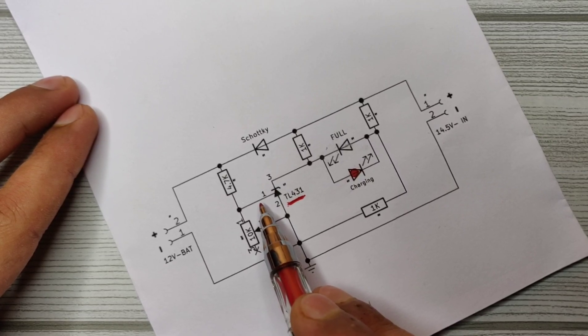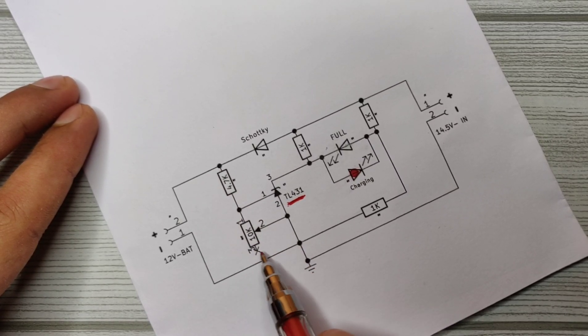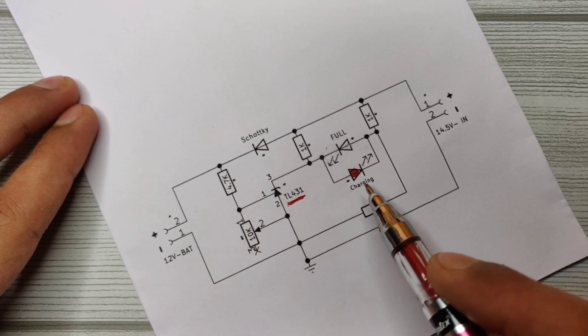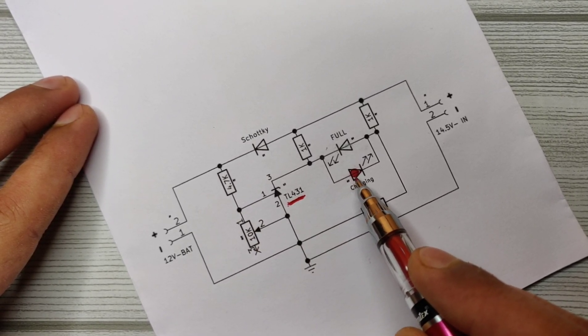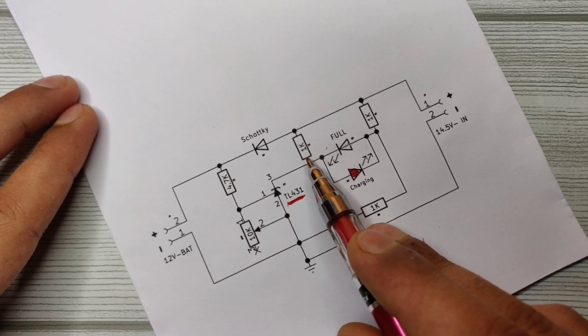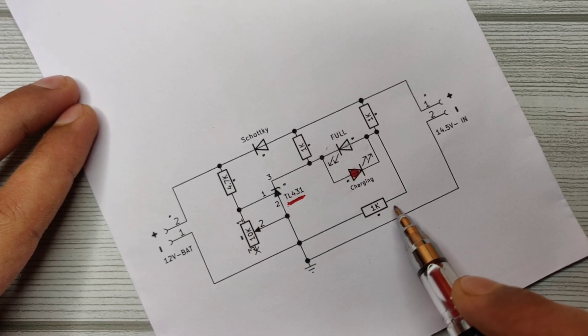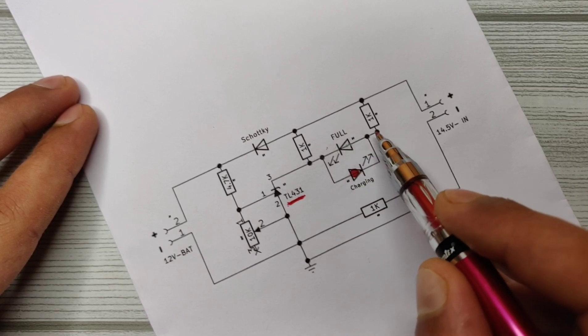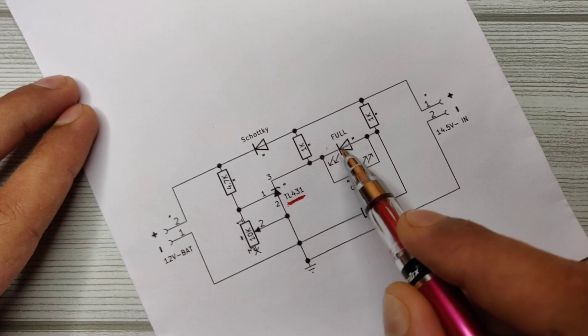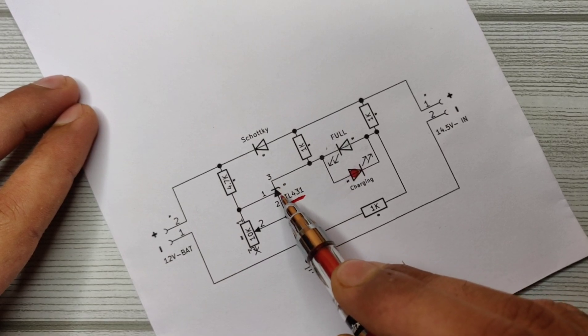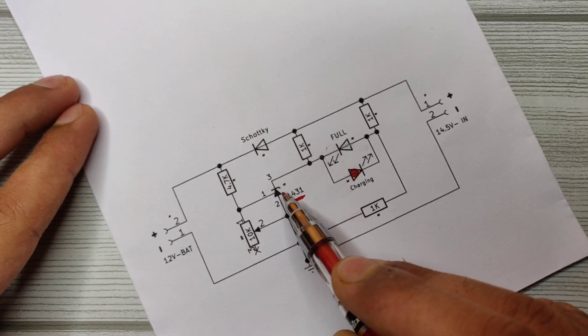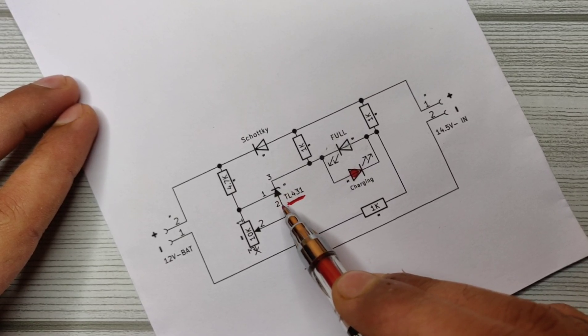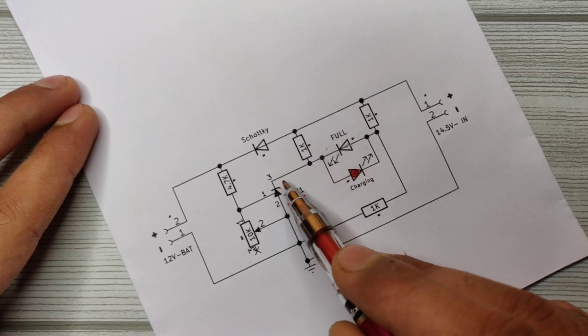This charging red LED receives positive from this 1 kilo-ohm resistor and negative from this 1 kilo-ohm resistor. This green full LED receives positive from this 1 kilo-ohm resistor and negative from pin 3 of the shunt regulator IC. As I told you, when the shunt regulator receives the required positive voltage on pin 1, it passes negative voltage connected with pin 2 to pin 3.